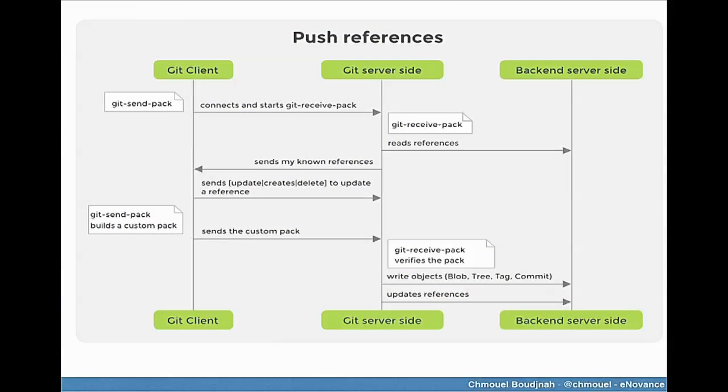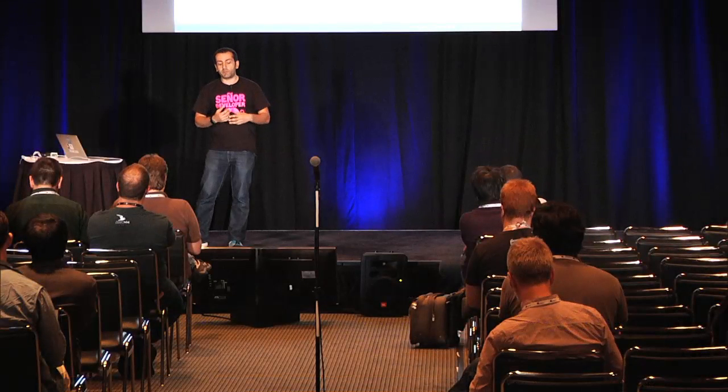On the push side, you have git-send-pack, which connects and starts git-receive-pack — same idea as the fetch. It reads the references from the backend server, then sends back what the action was: create, delete, or update a reference. Git-receive-pack verifies from the backend server and uses the custom pack. It's almost exactly the same as the fetch, but in a push way — it computes the difference between the two and sends it back to the object store. That's been proven pretty scalable and pretty efficient in the way it sends things over.